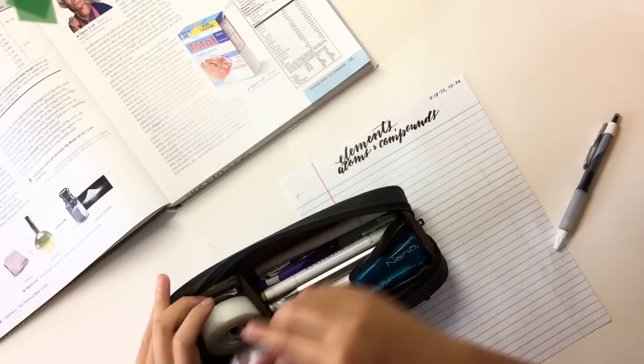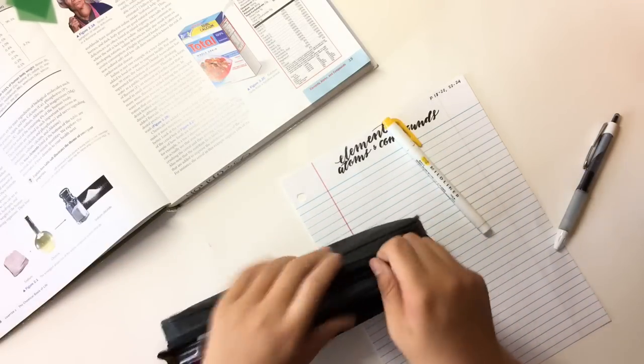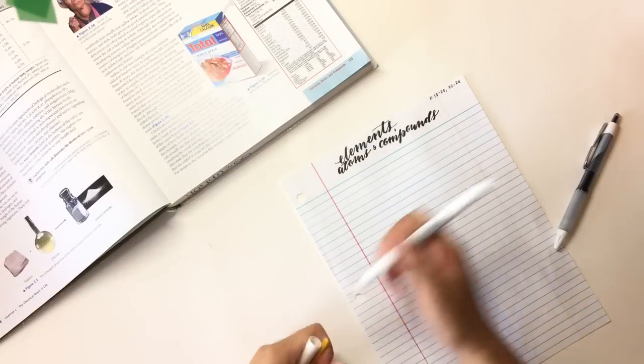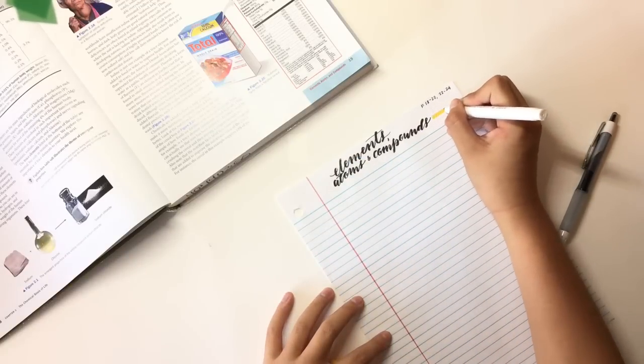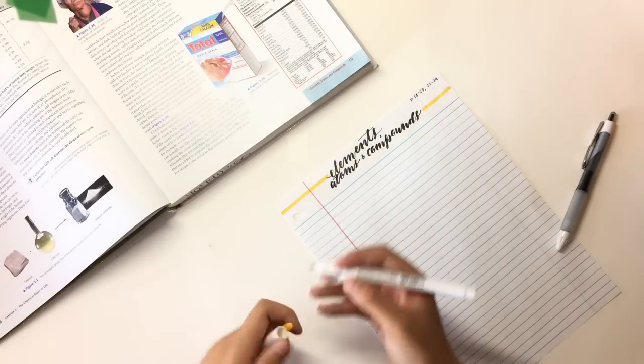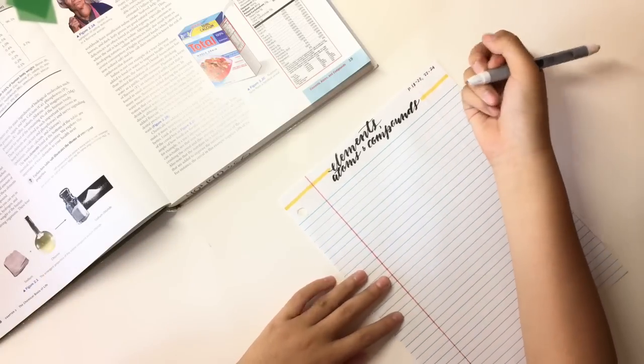So next I choose a color of Zebra Mildliner based on the title. So element sounds like emerald and that reminded me of Emerald City, which reminded me of the yellow brick road. It's kind of a stretch. But anyways, I'm highlighting two lines or sometimes I'll do a different number of lines, but it's just to divide the top of the page.